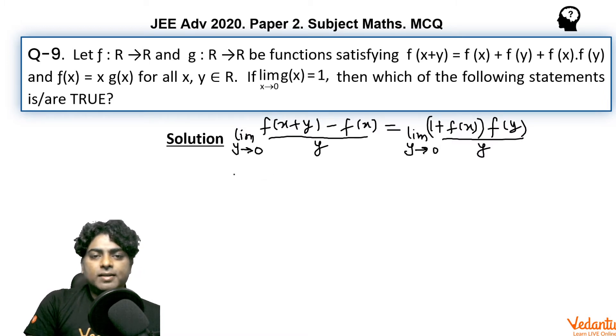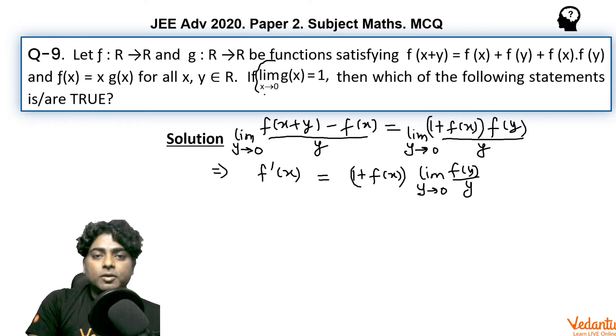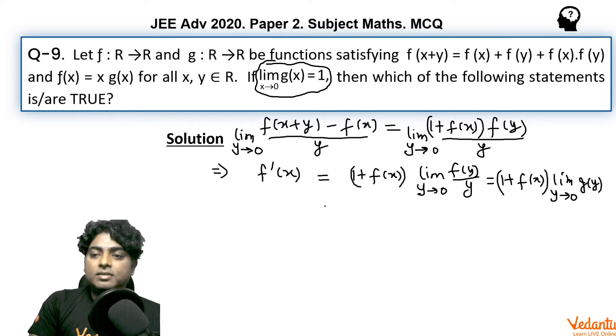In the left hand side, I have made f'(x) which was needed to be checked. In the right, limit is on y so I can take (1 + f(x)) common and limit f(y)/y, y tending to 0. And if you look carefully at the problem, limit of g(x) is 1 and g(x) is actually f(x)/x. So I can write it as (1 + f(x)) limit y tending to 0 g(y). And it is 1. So it is finally 1 + f(x).